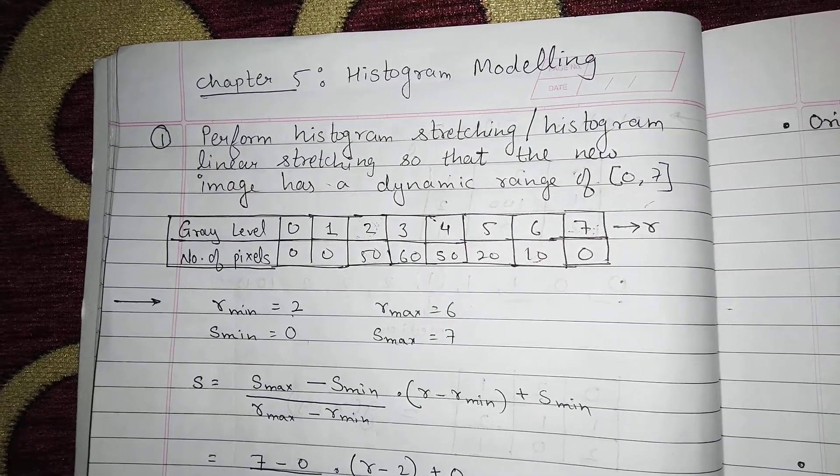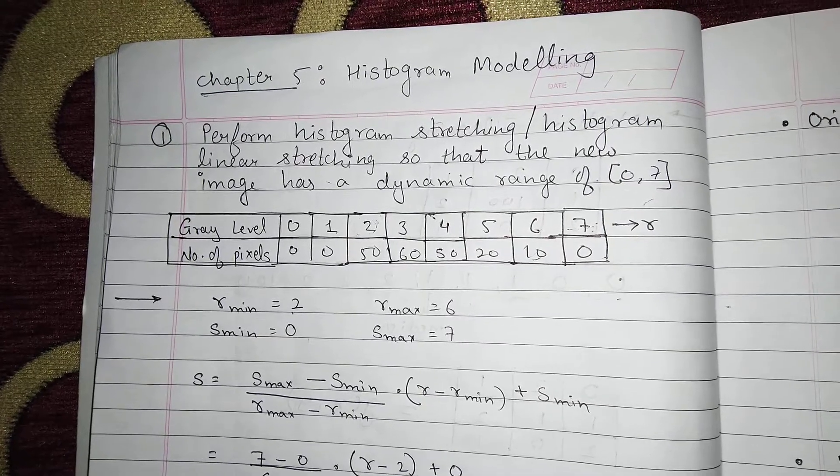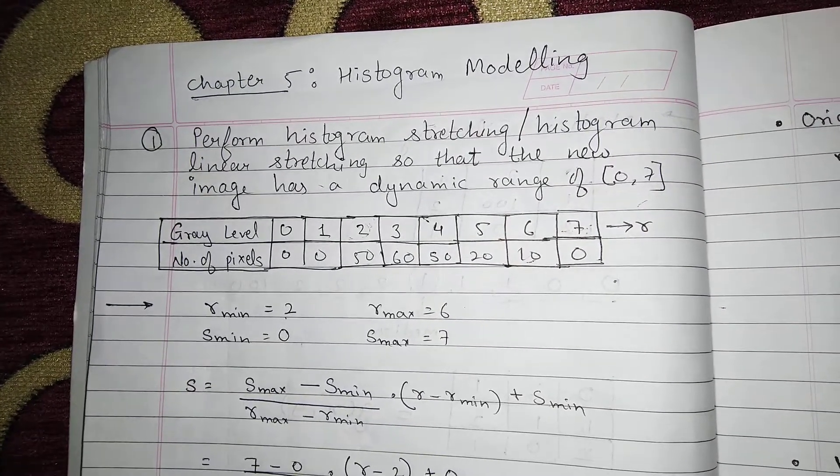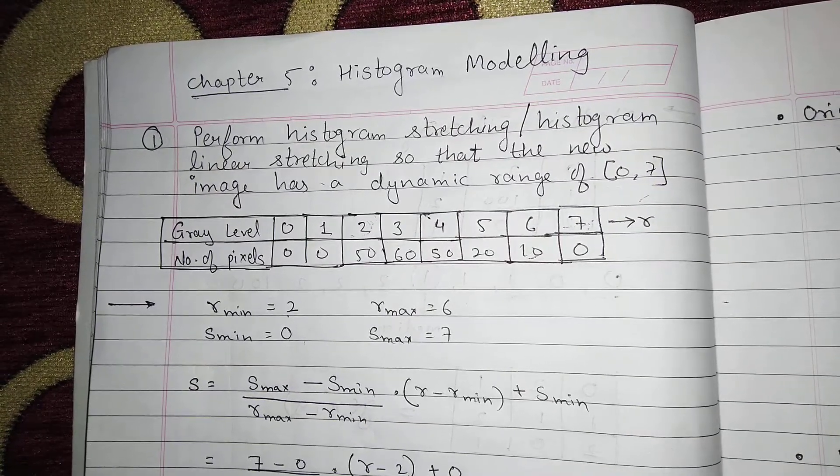This 0 to 7 is my S. The question given is gray levels 0, 1, 2, 3, 4, 5, 6, 7 and number of pixels are 0, 0, 50, 60, 50, 20, 10 and 0.